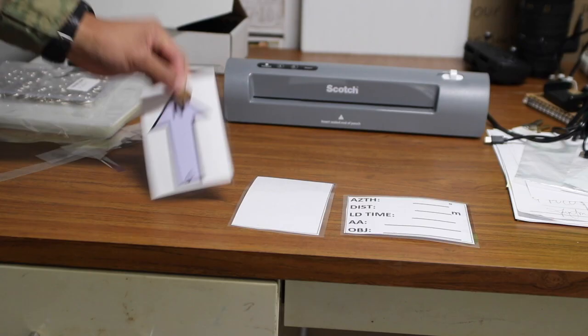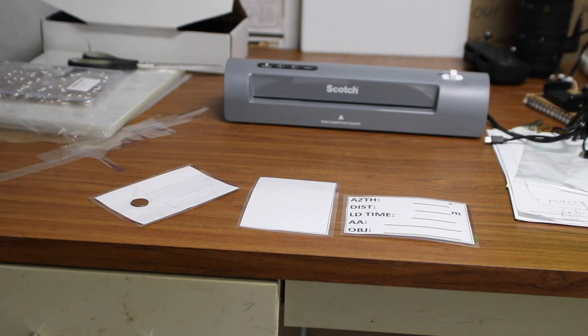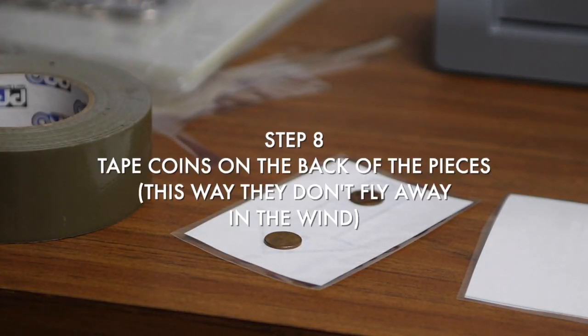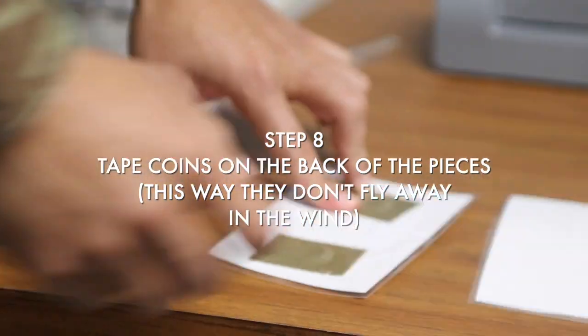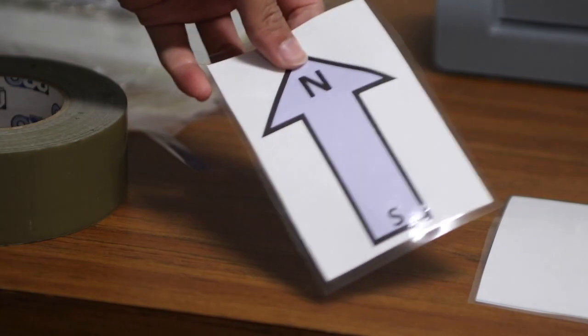Put the pennies on the back of the cards and duct tape them down. This way when it's windy outside, your pieces won't fly away. The cadre are gonna be like, holy crap, this guy's got a nice TMK.